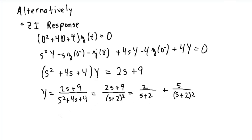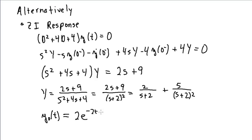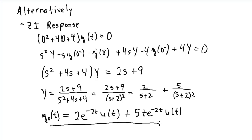From the partial fraction expansion, the zero-input component in the time domain is 2e^(−2t)u(t) + 5t·e^(−2t)u(t). This is determined completely by the initial conditions, so as long as the initial conditions don't change, this part of the solution remains the same.